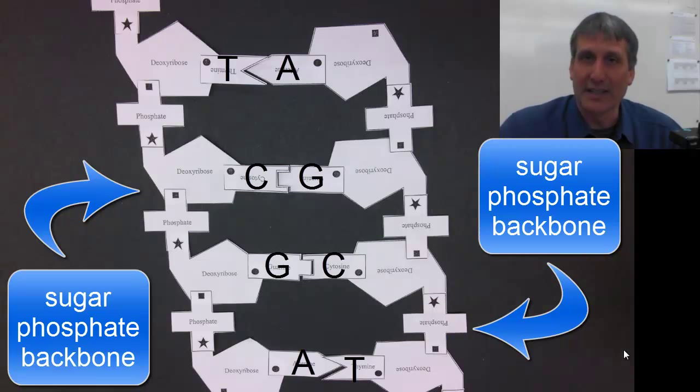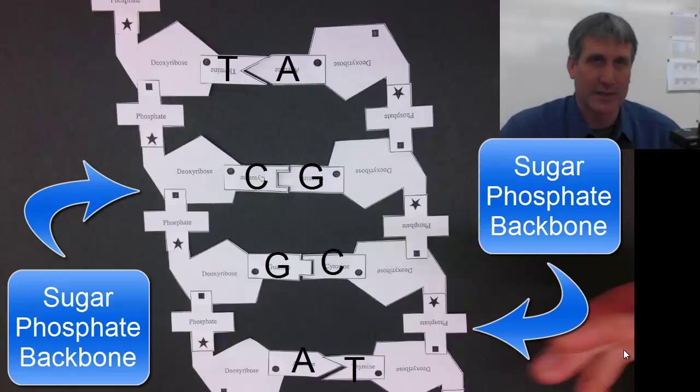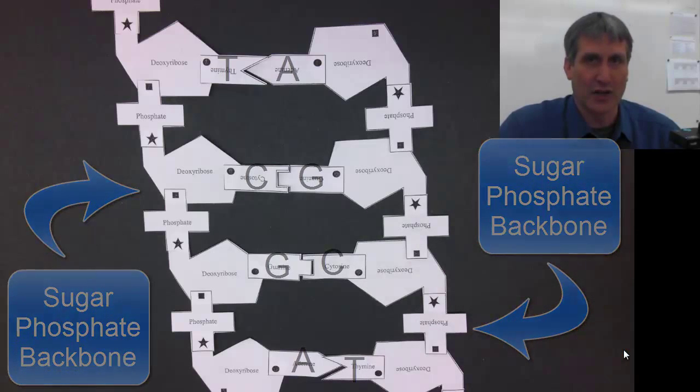Remember, DNA is a polymer, and you can attach the nucleotides together to make any length of DNA that is necessary. And human chromosomes are made of millions of nucleotides attached together to make that huge macromolecule. So now let's talk about how the structure of DNA helps it to do its specific functions.